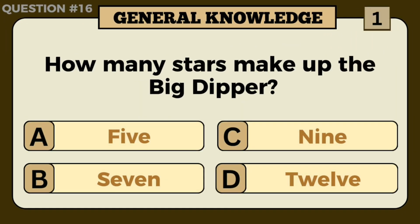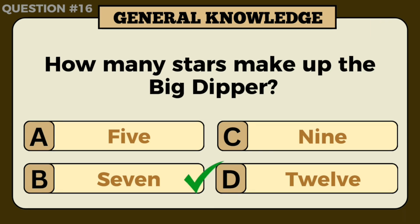How many stars make up the Big Dipper? Answer: B — 7.